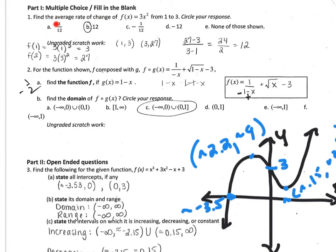For the first one, rate of change is asking you for the slope from the points where x is 1 and x is 3. You need to go find those y values, find the slope between them, and that's going to give you 12.